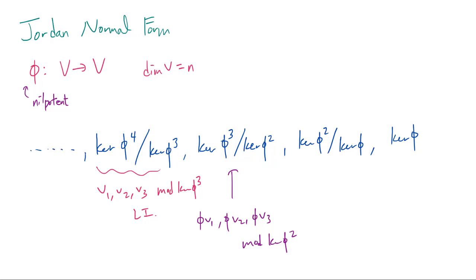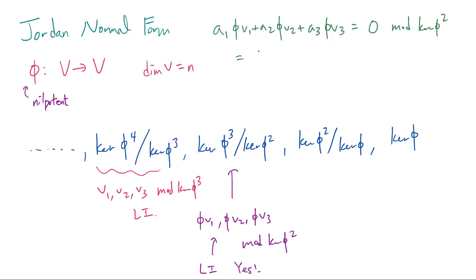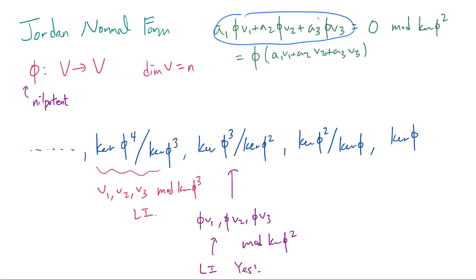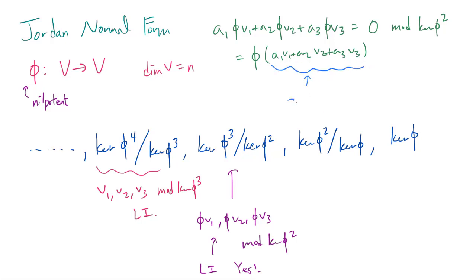A natural question that arises is whether this is also linearly independent. I claim the answer is yes. To check: suppose we have a1·phi(V1) + a2·phi(V2) + a3·phi(V3) equal to 0 mod kernel of phi squared. This is really phi of (a1·V1 + a2·V2 + a3·V3), and since this is 0 mod kernel of phi squared, the entire thing is in kernel of phi squared. That tells us a1·V1 + a2·V2 + a3·V3 is 0 mod kernel of phi cubed, because when we apply phi two more times we get zero.